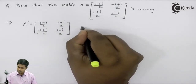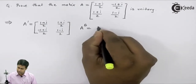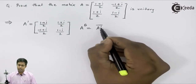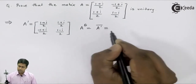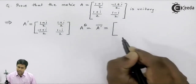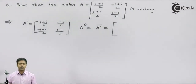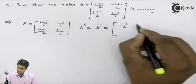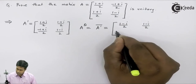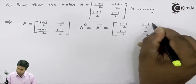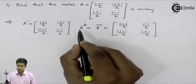Now let us find the transpose conjugate, that is A-theta, which is nothing but the conjugate of A-dash, that is the transpose. To find the conjugate, we generally change the sign of imaginary terms — plus becomes minus and minus becomes plus. So this term becomes (1-i)/2. Again, (1-i)/2, (-1-i)/2, and (1+i)/2. Now we have the value of A-theta.